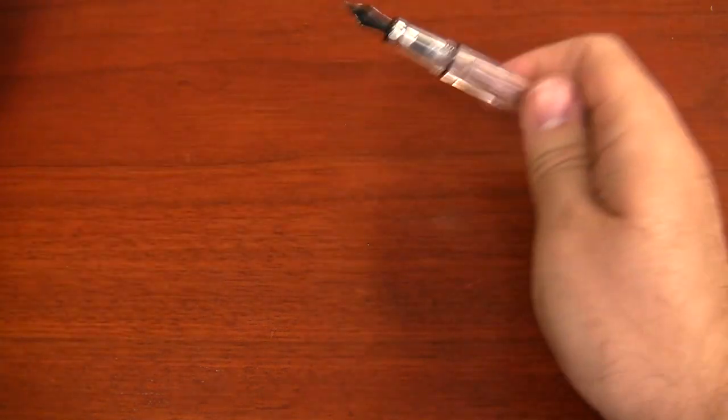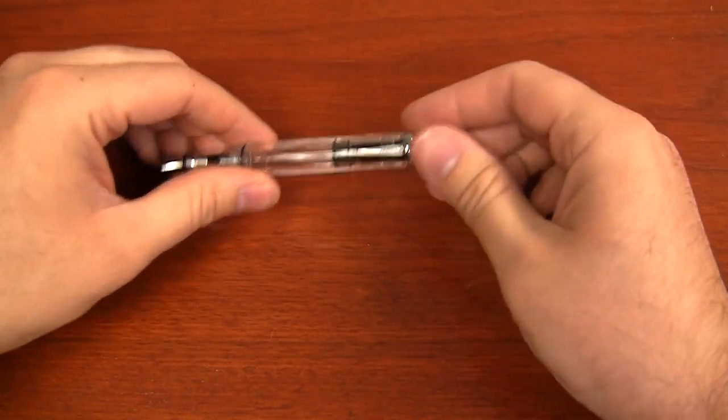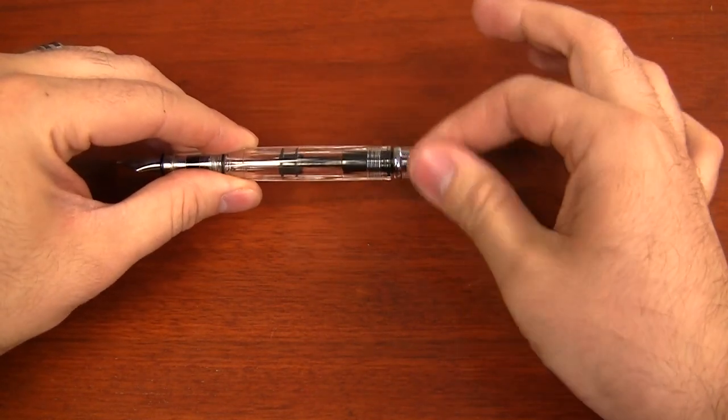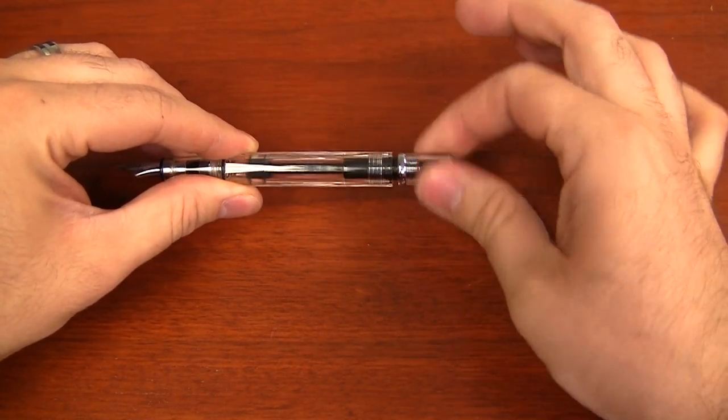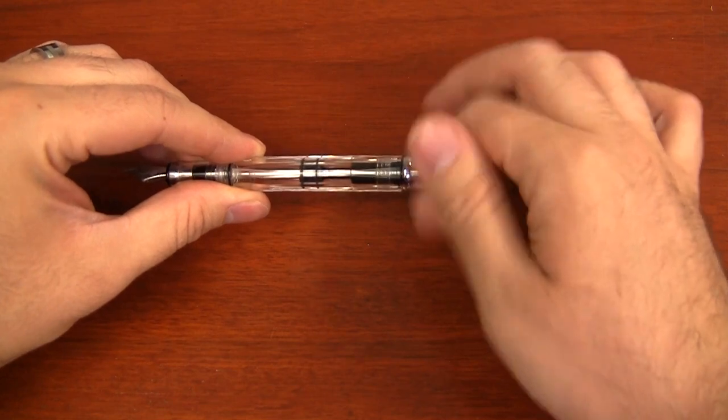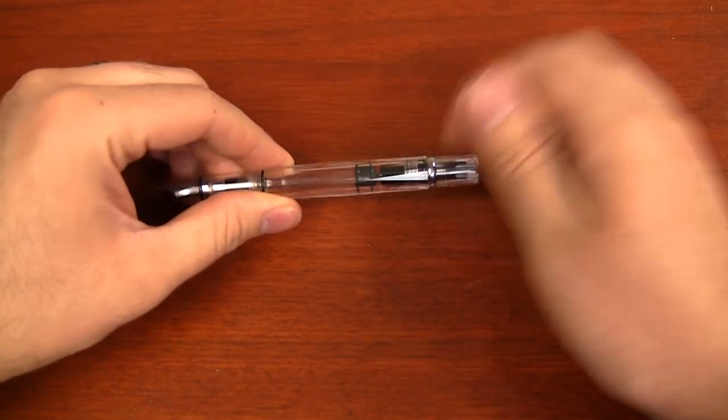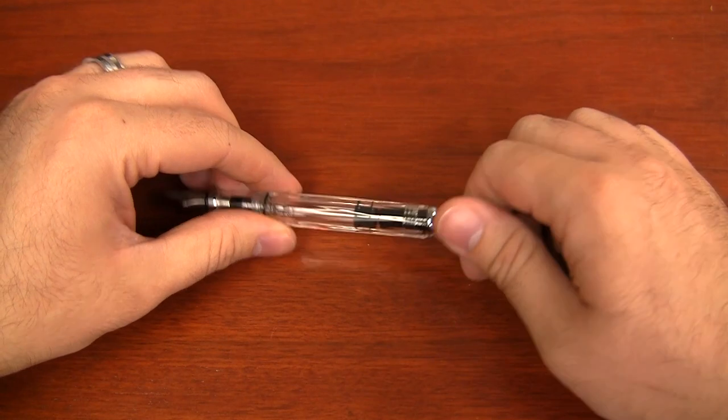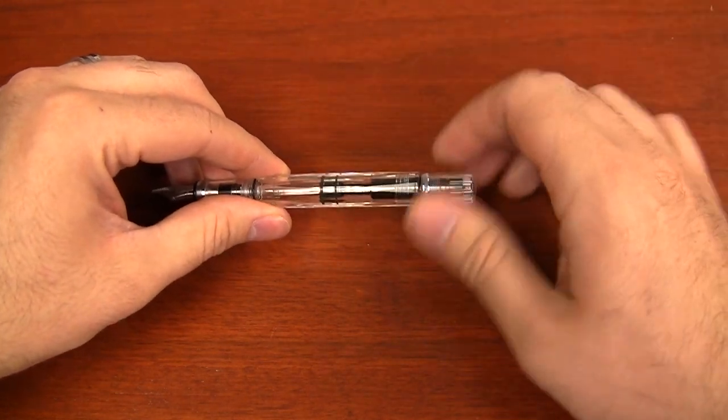Basically what I want to show you is when you have this pen, it's a piston filling pen, so you've got this end cap here that you're unscrewing and it's causing your piston to move up and down. That's how the pen fills. If you're familiar with piston pens at all, very conventional design, nothing too crazy going on here.